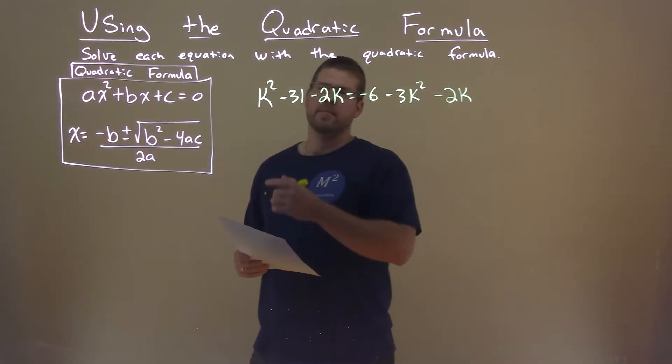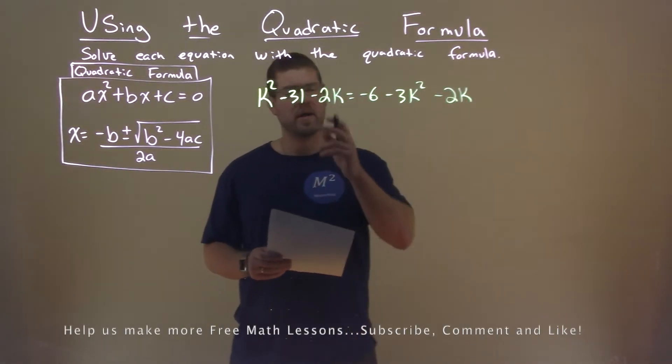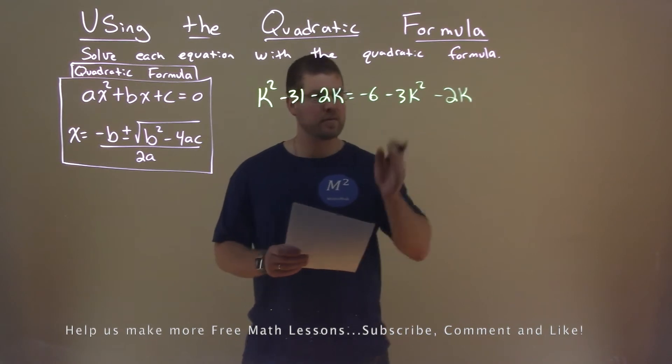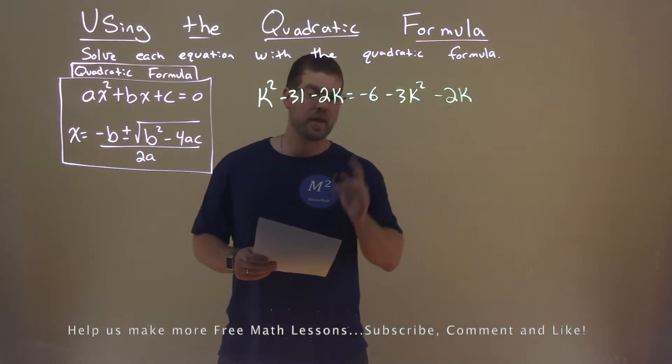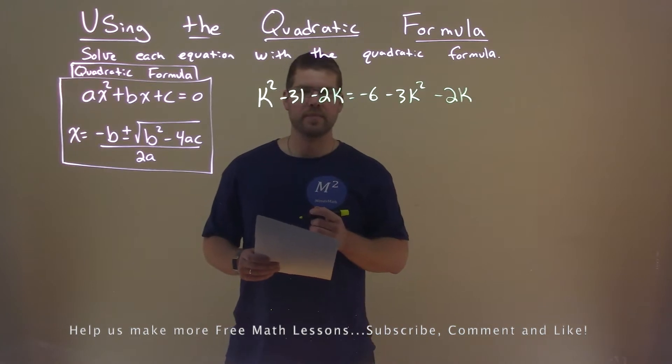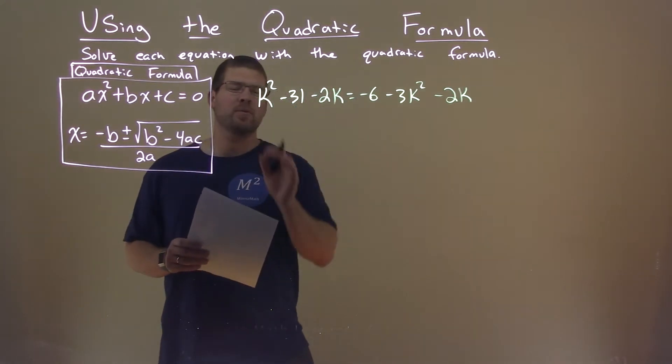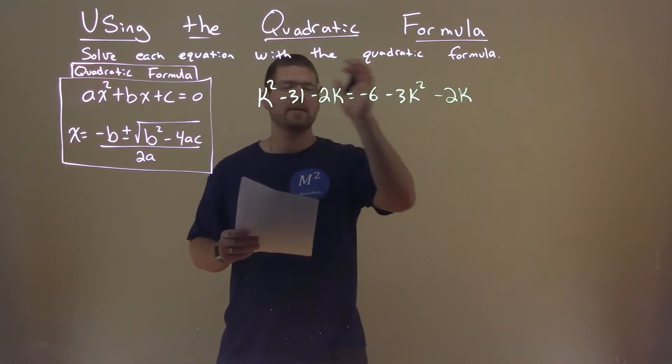We're given this problem right here: k squared minus 31 minus 2k equals negative 6 minus 3k squared minus 2k, and we're going to solve using the quadratic formula. I have to get everything equal, or everything over to the other side, have it equal to 0.